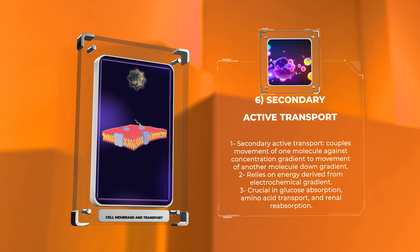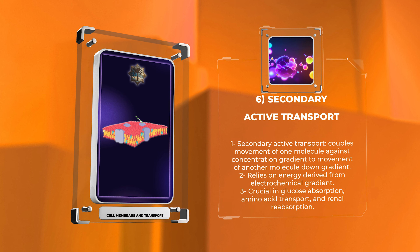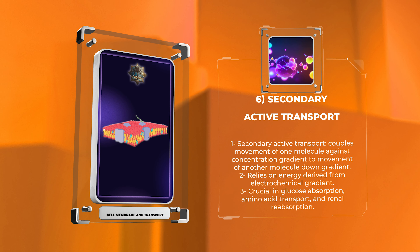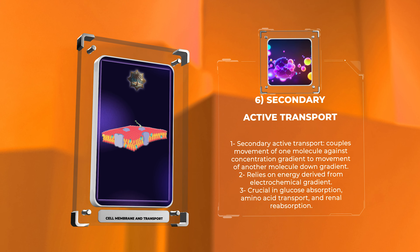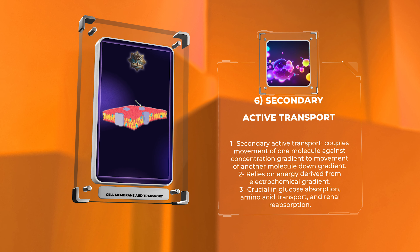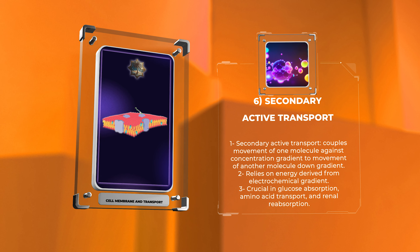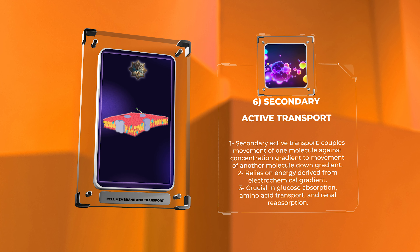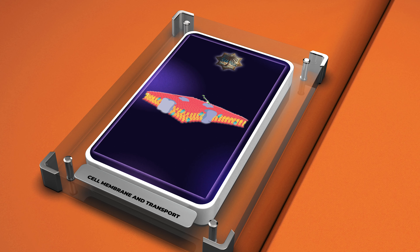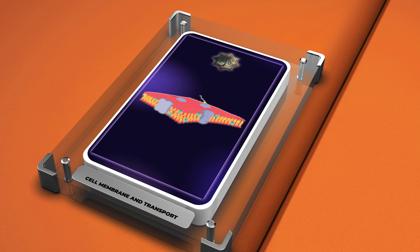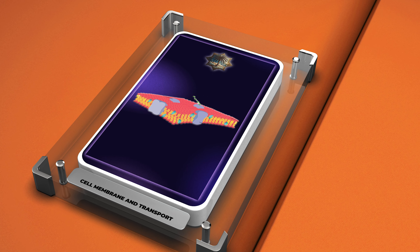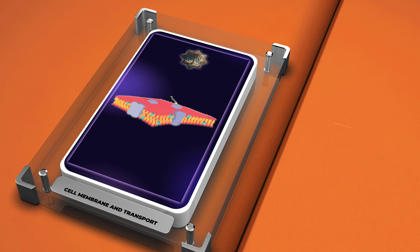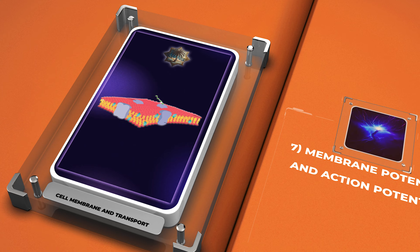Secondary active transport is crucial in various physiological processes including glucose absorption in the intestines, amino acid transport, and renal reabsorption.